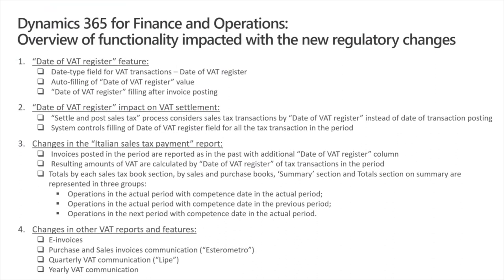The third part of the update is dedicated to the changes introduced to the Italian sales tax payment report. When the Date of VAT Register parameter in General Ledger is marked, this report will work in a new way. It will be the same SSRS report, but in this scenario it is significantly extended. First of all, the invoices listing part will include a new column to report the Date of VAT Register. The list of invoices will not be changed — all invoices will still be reported by date of posting, which is how the invoices are registered in the related books.